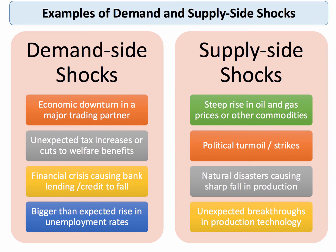Here's a great chance to quickly revise demand side shocks and supply side shocks. Demand side shocks are unexpected events affecting the conditions of aggregate demand. It could be a recession or downturn in the economy of a major trading partner, maybe an unexpected tax change or welfare reform. The global financial crisis and the credit crunch was a major demand side shock to many countries, and for example a bigger than expected rise or fall in the rate of unemployment.